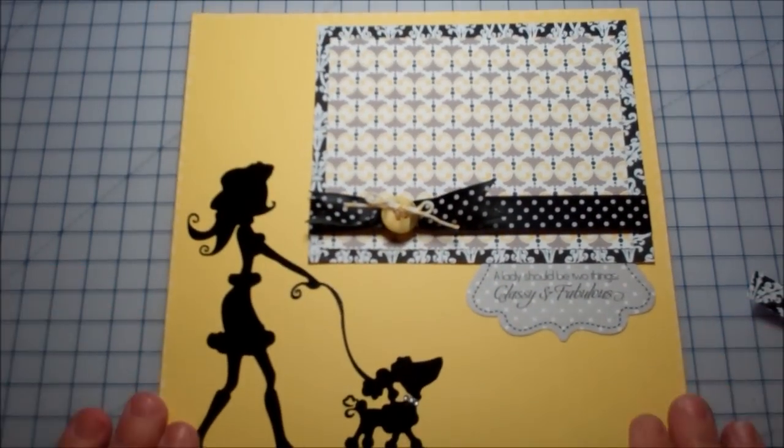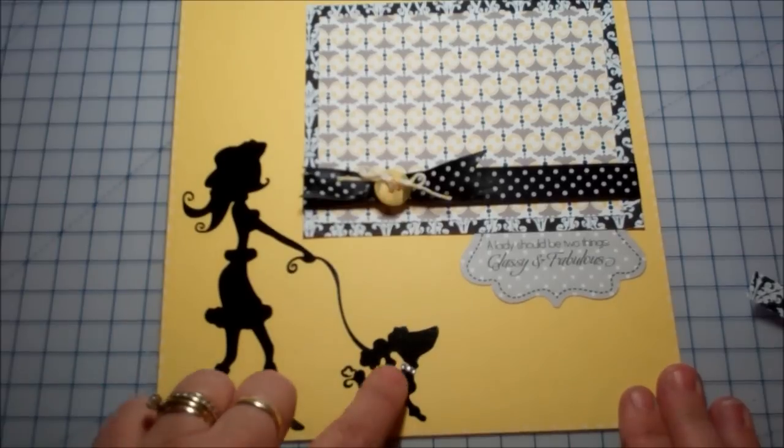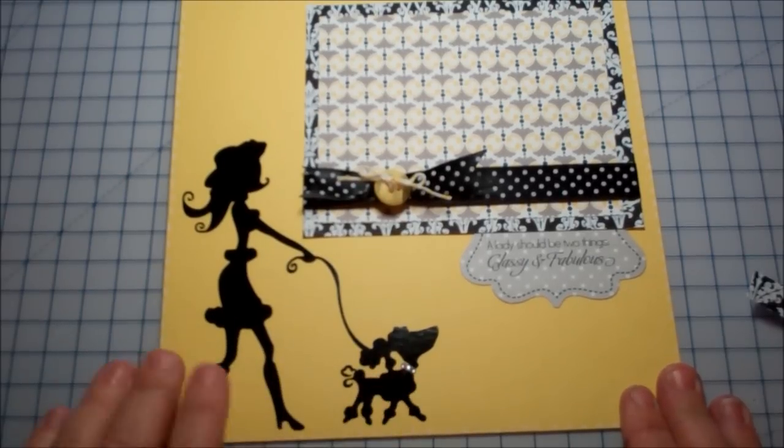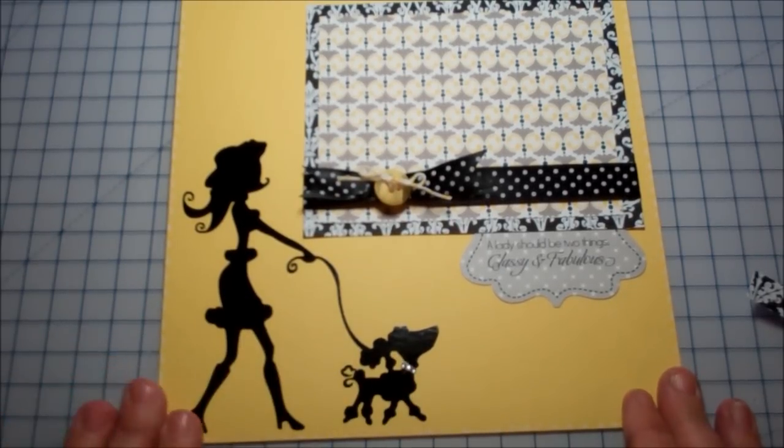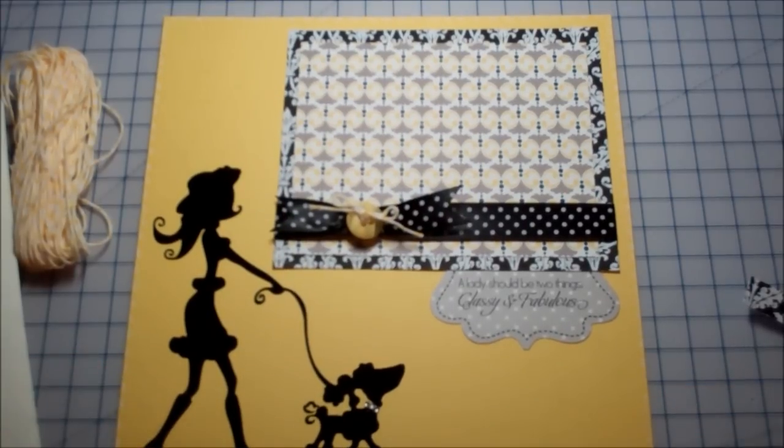Okay. So there's my finished page. And you can see that I added an extra rhinestone. I don't know. I like odd numbers. So there you go. There's my page. And I hope you enjoyed it. And I will see you next time. Thanks for watching. Bye bye.